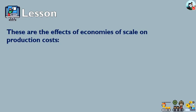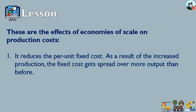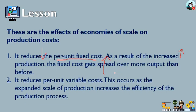There are two effects of economies of scale on production cost. Number one, it reduces the per unit fixed cost — as a result of increased production, the fixed cost gets spread over more output than before. Number two, it reduces the per unit variable cost, as the expanded scale of production increases the efficiencies of the production process.